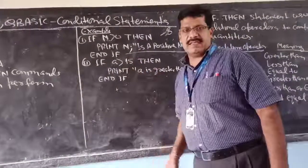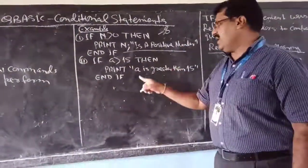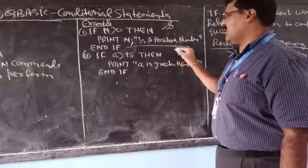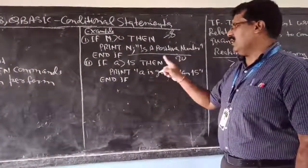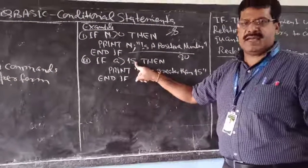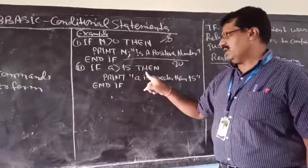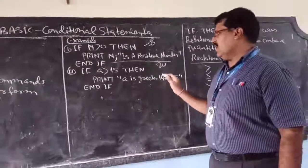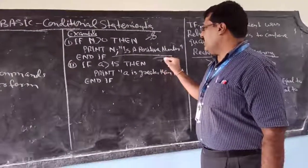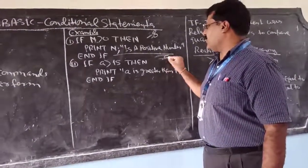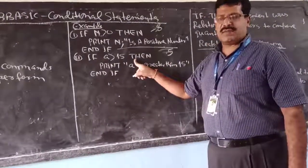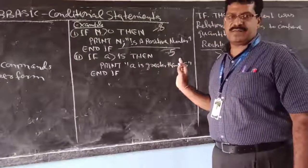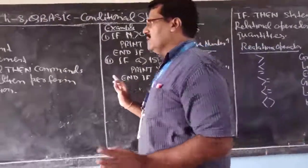Second example: IF A is greater than 15, THEN print 'A is greater than 15.' Suppose A is 20 — 20 is greater than 15, so it will print that A is greater than 15. Now suppose you give 5 — 5 is not greater than 15, condition is false, so nothing will be printed.